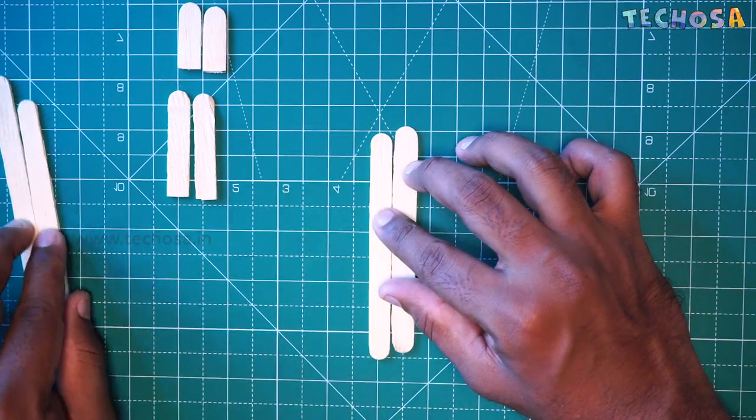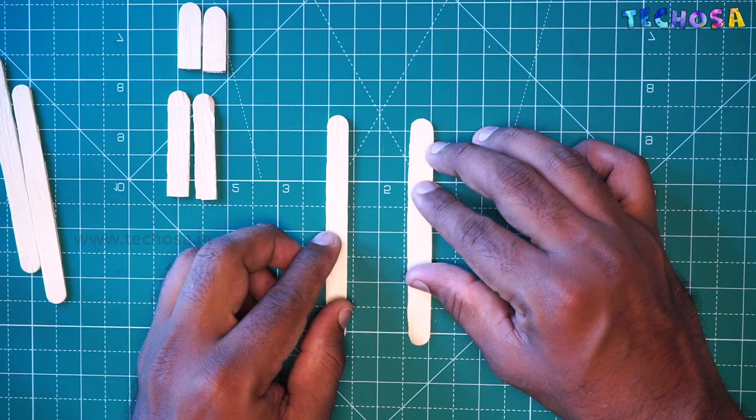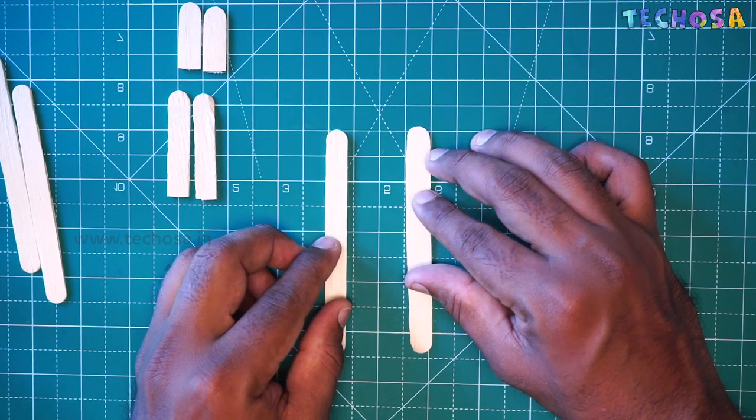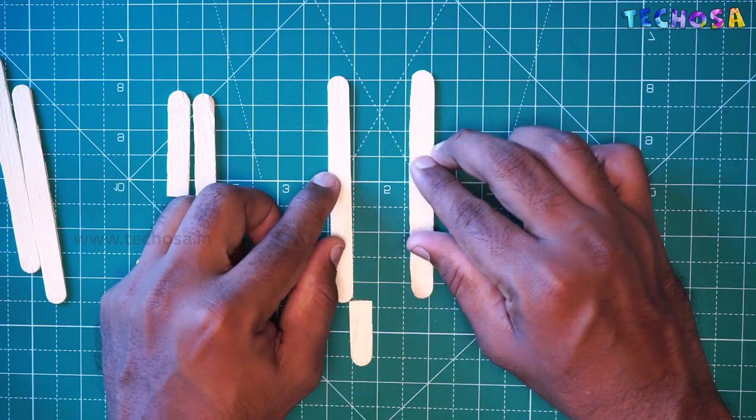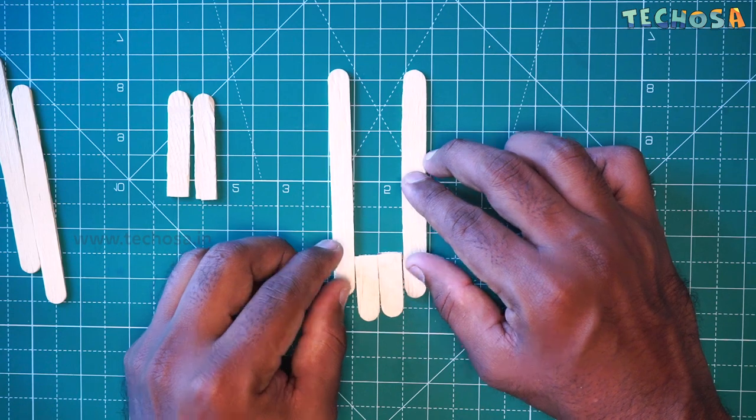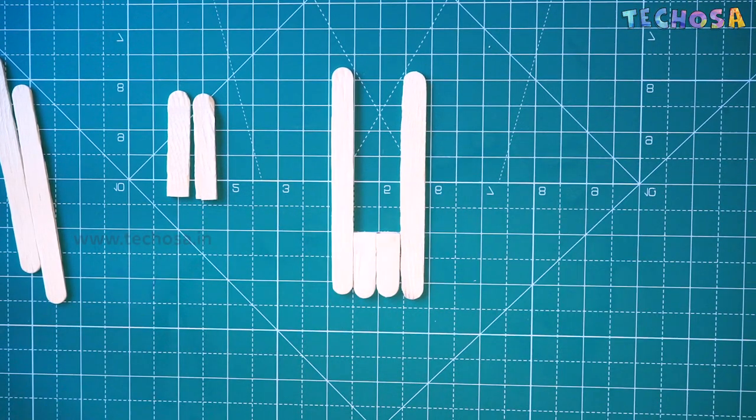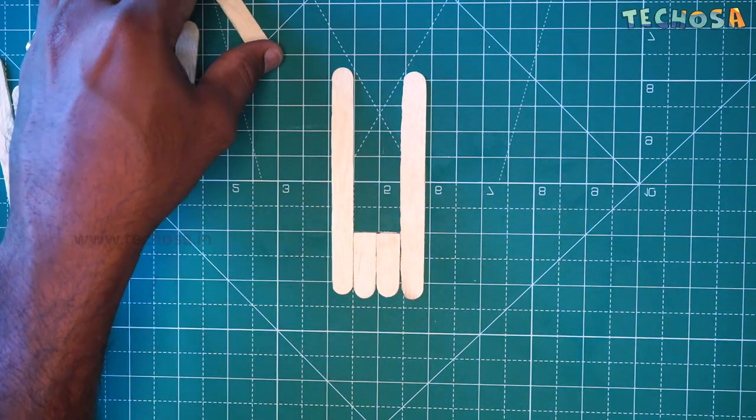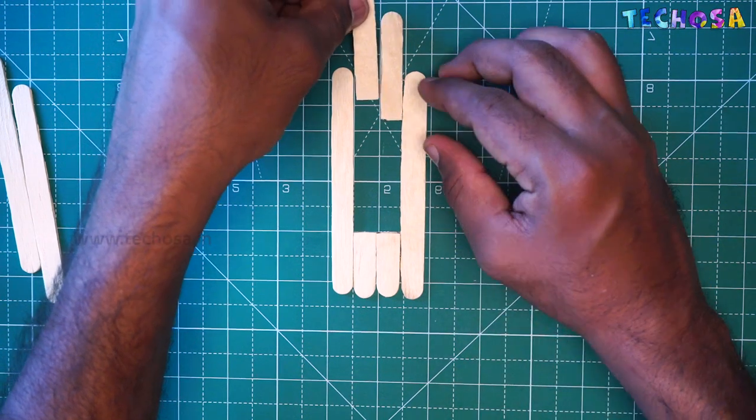Now take these two sticks from the four sticks and arrange it in this way. Also arrange the small portions of sticks that have been cut in this way. Then place the large pieces that have been cut on the top like this.